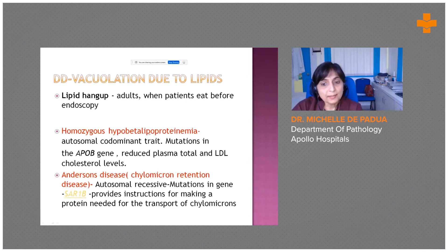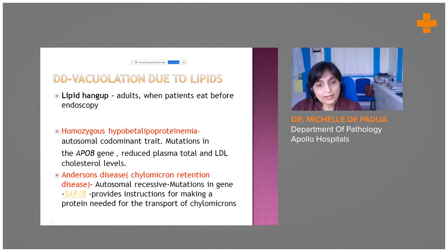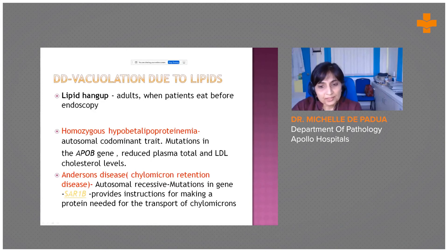There are two other very similar conditions: homozygous hypobetalipoproteinemia and Anderson's disease (chylomicron retention disease). Both can have a very similar light microscopic finding and can only be differentiated from abetalipoproteinemia by genetic analysis.